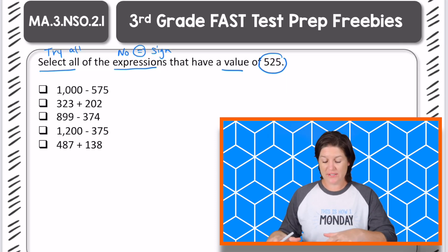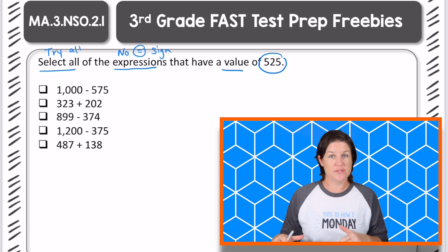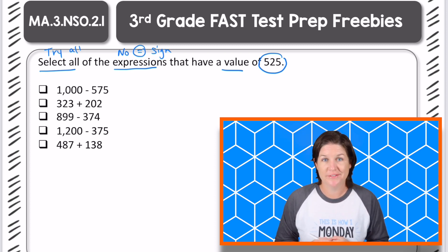If you notice down here, we have some expressions. There is no equal sign present. And then a value means a worth or an amount of 525. Now, before we even get started going over this, I'd like for you to go ahead and pause the video and solve this one on your own. Then press play and come back to check your work.